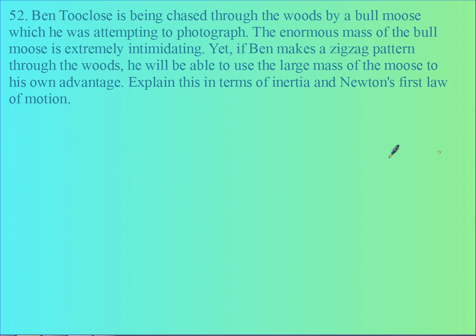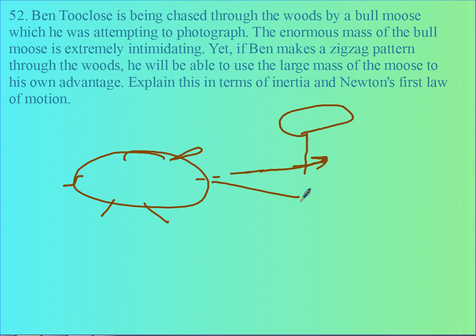Now, look what happens when the big moose... Here's my moose. Those are his horns. He's got a tail. When he tries to dodge a tree, what's going to happen? His inertia is going to make him want to keep going in a straight path. He's not going to want to veer to the side. So because his inertia is going to keep him going in a straight line, the moose is going to have to slow down or he's going to wind up hitting the trees.